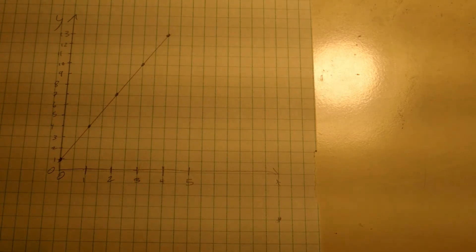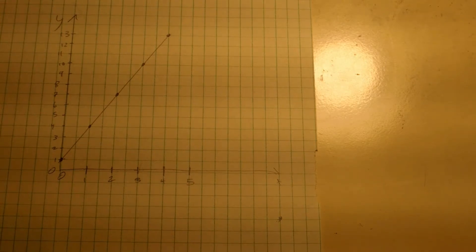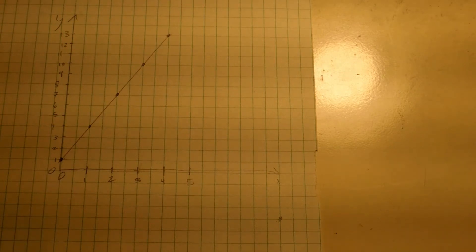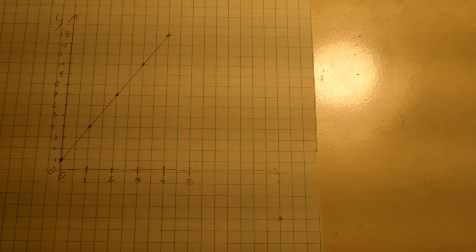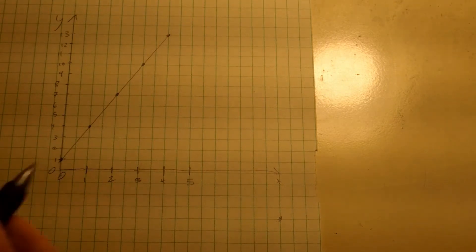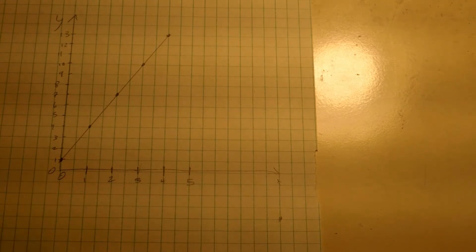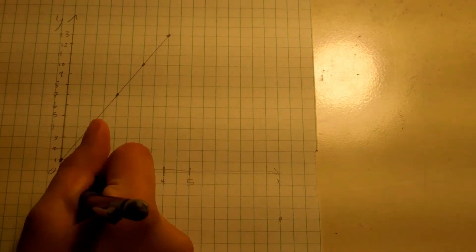Remember, the y-intercept is the y number when x equals 0. On a graph, we have to find where 0 is on the number line, right here. Now, we have to move upwards without moving left or right so that we stay at x equals 0 to find the y number on the diagonal line. I'm going to go up until I hit the diagonal line. That number is 1.